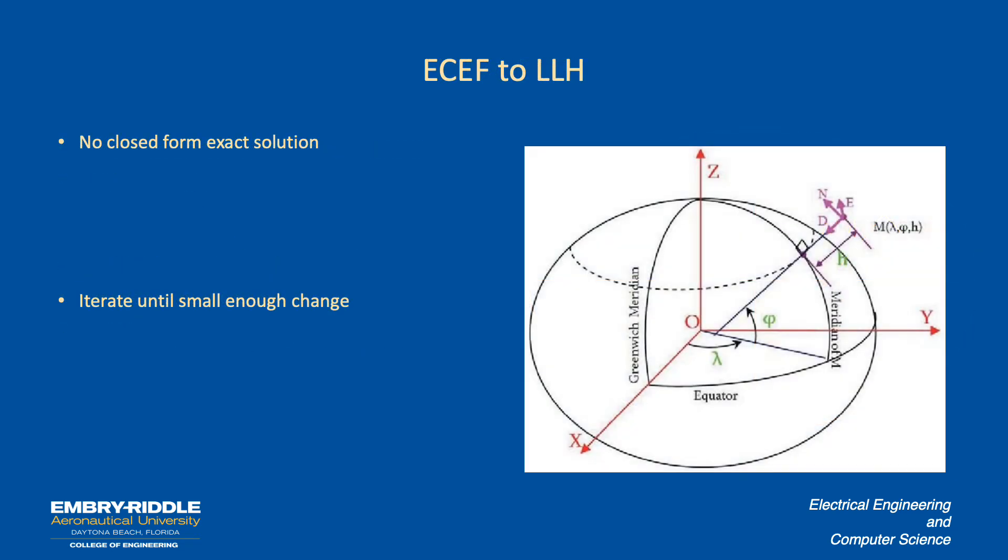So we'd like to go from the earth-centered earth-fixed to the lat, long, height. There is no closed form way to do this. So that means there's two approaches. One is to have an approximate direct form or to do it by iteration. And the solution is going to iterate rapidly. It converges with one or two iterations to good enough for our purposes and almost anybody's purposes.